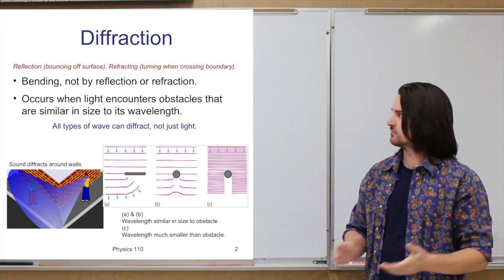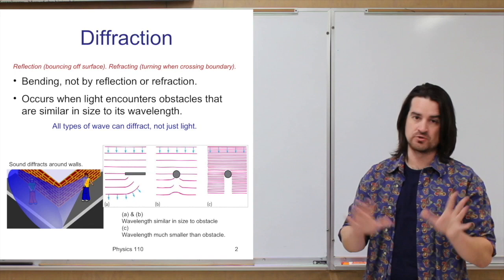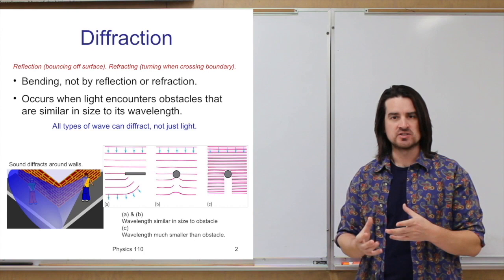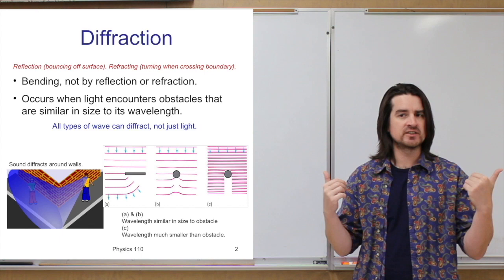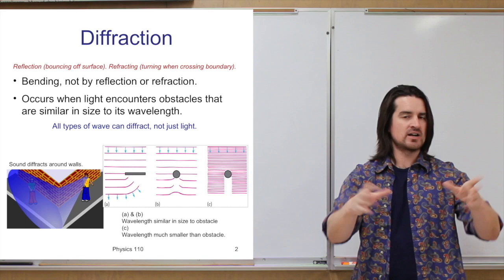There's another thing that light does, and just as reflection and refraction are not confined to just light waves, diffraction is something else that light will do — and all other kinds of waves will do — but it's not the same as reflection or refraction. Diffraction is a particular thing that happens when a wave encounters an obstacle of some kind, and it's not bouncing off of it and not going into or through it. If it encounters an obstacle and essentially goes around or between, that's when we get diffraction.